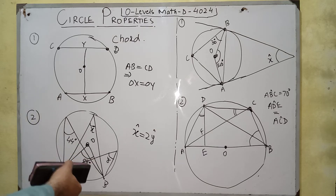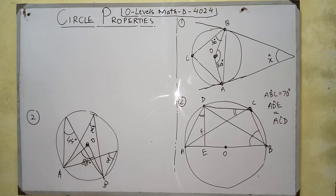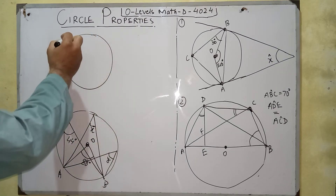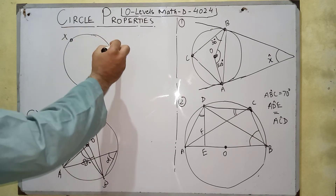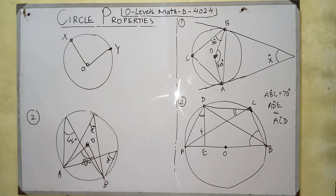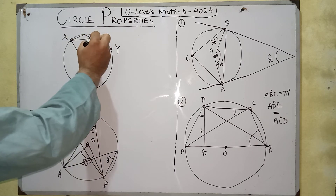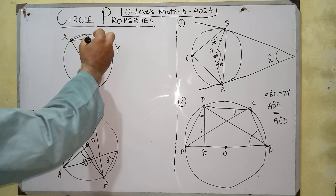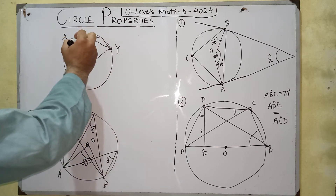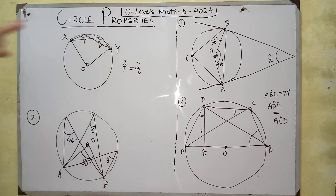We can also discuss this property in terms of a major arc. If you have a circle with a major arc XY — which is greater than half the circumference — and this major arc subtends two angles at the circumference, let's say angle P and angle Q, then angle P and angle Q will be equal, because both angles are made by the same arc XY.